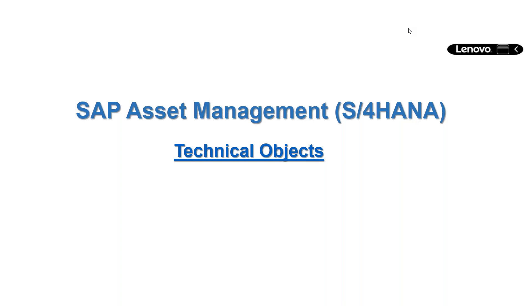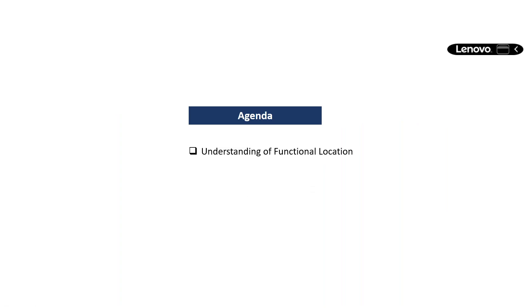In this session, we will understand the use of technical objects. My agenda is to explain: understanding the function location, structuring the function location, how we can create a function location, and then transferring the data when we are installing or dismantling any equipment — or how data is going to transfer from a parent function location to its subordinate function location, with reference to a reference function location.